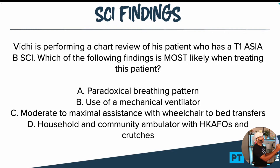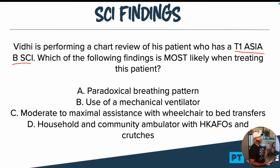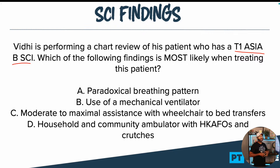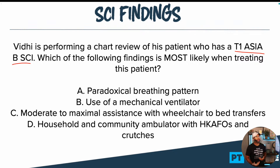Viddy is performing a chart review of his patient who has a T1 ASIA B SCI. It gave us the neurological level of injury, which is T1. ASIA B — if you're not familiar with the ASIA scale, definitely take a look at that. ASIA is graded A, B, C, D, and E. ASIA B means that the motor function below the level of injury is going to be non-existent. So all the muscles below the level of T1 are not working.